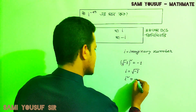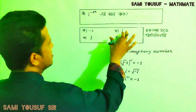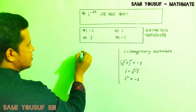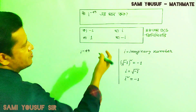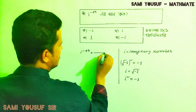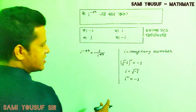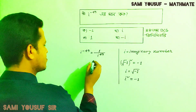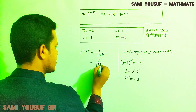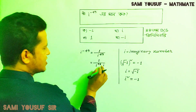The inverse we need to find is 1 divided by i to the power of 49. If i squared is minus 1, we will convert i to the power of 49 into i to the power of 48 multiplied by i.